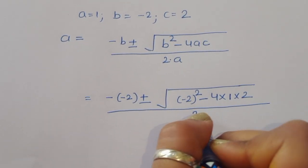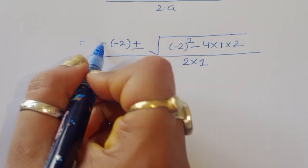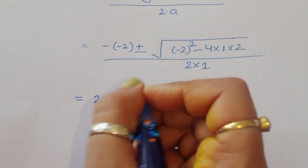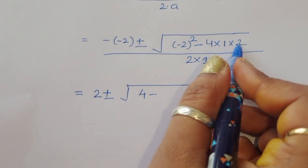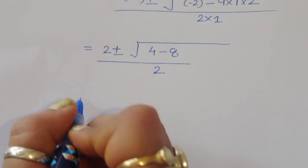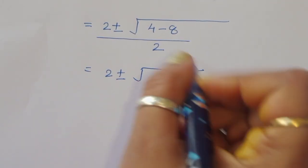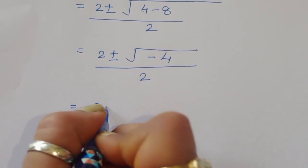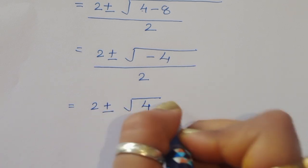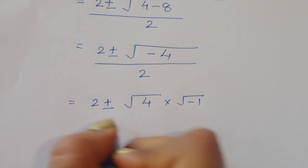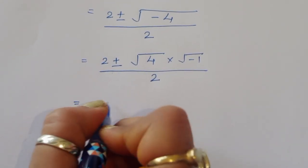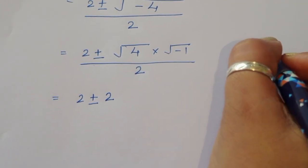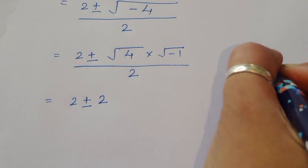Substituting: a equals 2 plus or minus square root of (4 minus 8), divided by 2. That gives 2 plus or minus square root of minus 4, divided by 2. We can write square root of minus 4 as square root of 4 times square root of minus 1. Since square root of 4 is 2, and square root of minus 1 equals i, we get 2 plus or minus 2i, divided by 2.